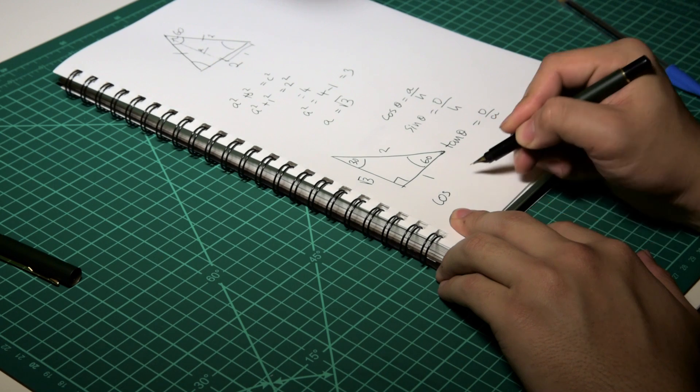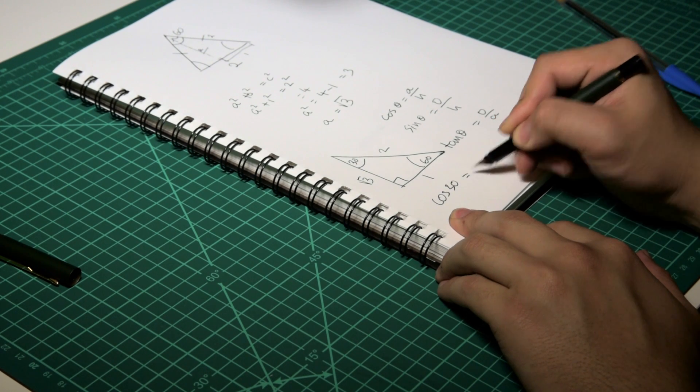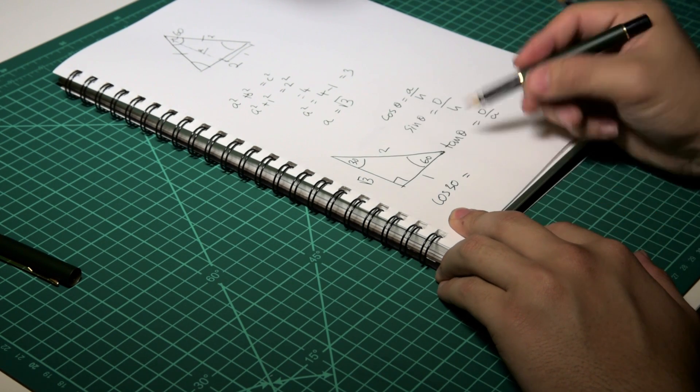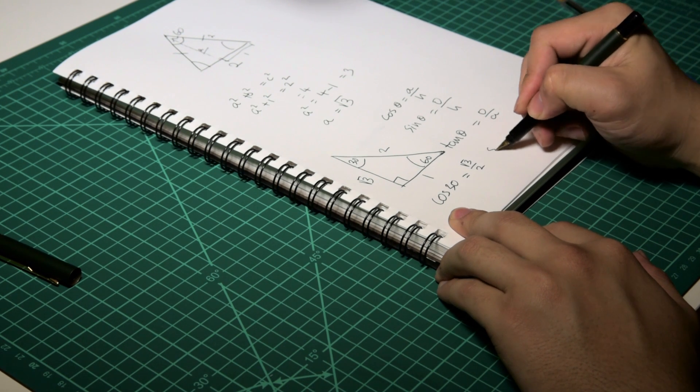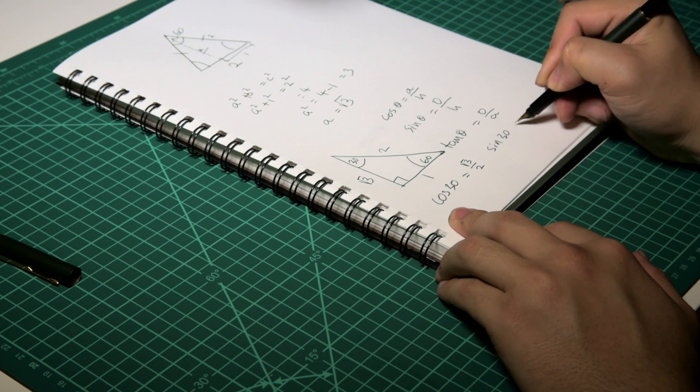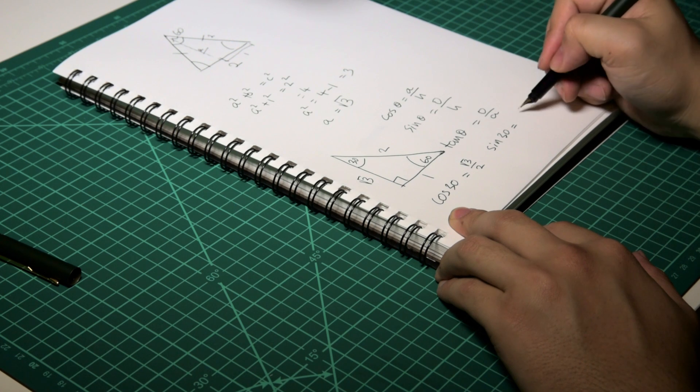Cos 30 is equal to square root of 3 on 2. Cos 60 is equal to 1 on 2.